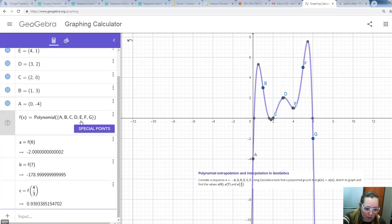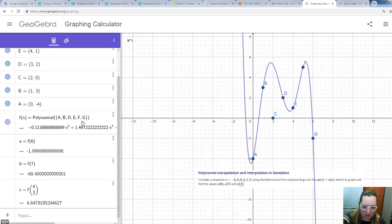And similarly, if you want to remove any point, say you want to remove the point C, you just remove it. And you see you have this new polynomial with its new equation here.